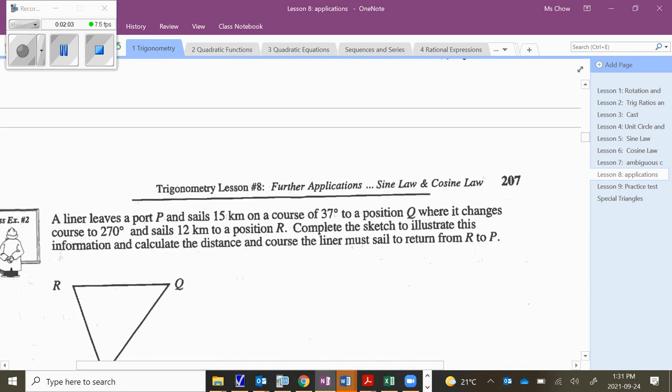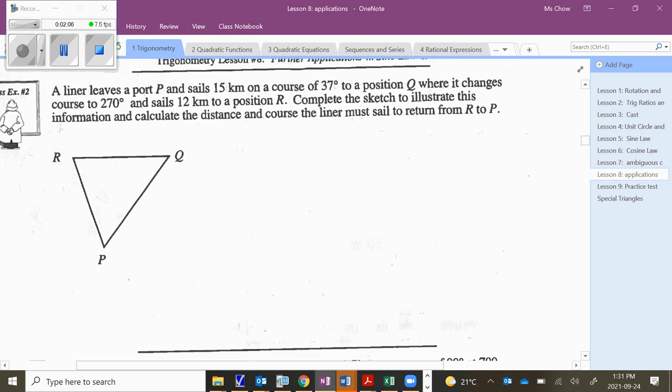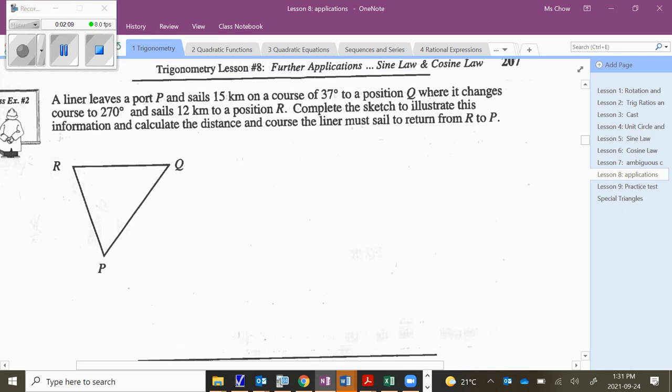Okay, so let's take a look at how we can do this. Looking at class example number two on page 207, we've got a liner leaving port P, and it sails 15 kilometers on a course of 37 degrees to a position Q. So our liner's at point P, if it sails 15 kilometers to Q, we know that this is 15 kilometers. The tricky part is this, some people go, oh, 37 degrees, that would be incorrect because it must be relative to north.